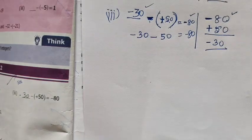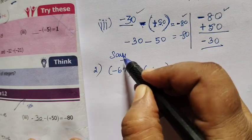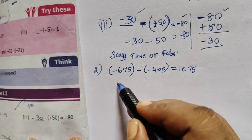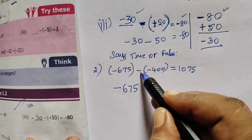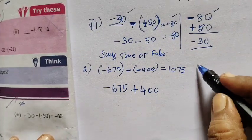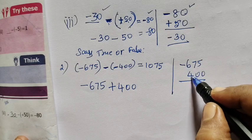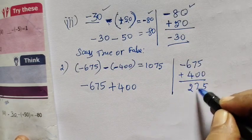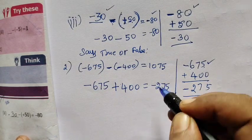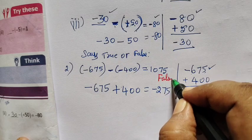Say true or false. Now the first true or false question: the second value is negative. The answer is plus 400. Let's verify: minus 675 then plus 400. Opposite signs, so we separate. The sign of the greater number applies. The answer is minus 275. So this statement is false.